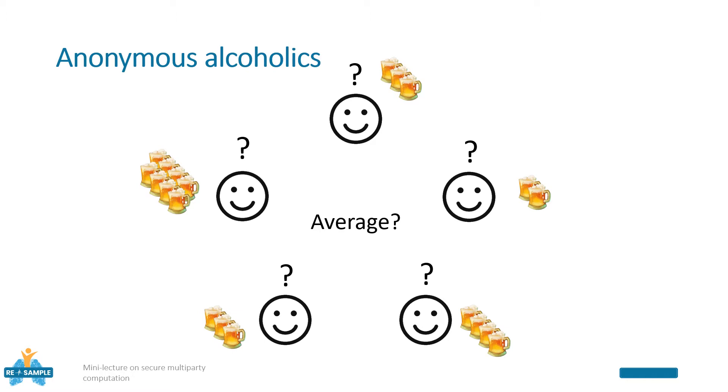But no one of them would like to reveal his own number of beers to the others. A possible solution to this problem consists in bringing their common friend Steve, who is trusted by everyone, and outsourcing the private amount of beers of each one to Steve. In this way he can compute the average value on behalf of the group.